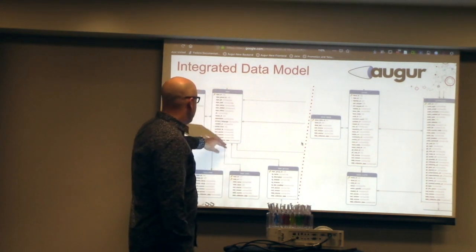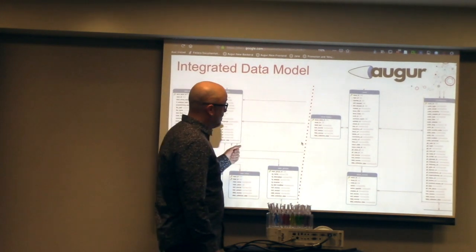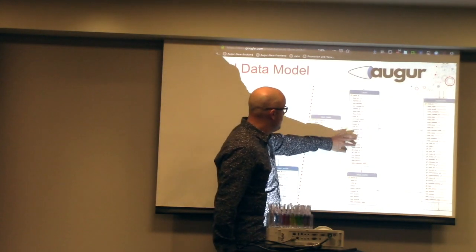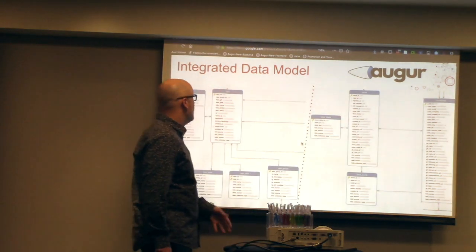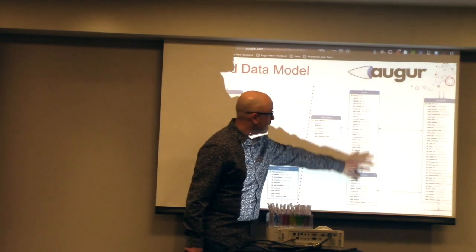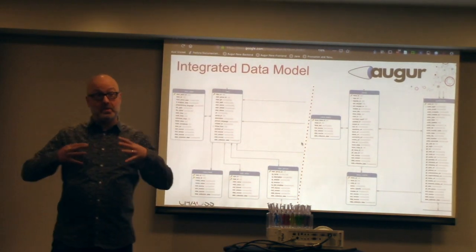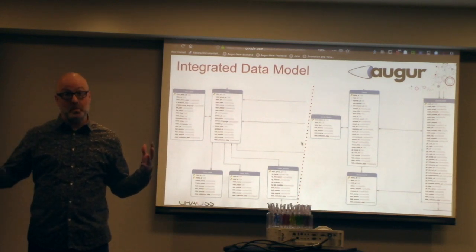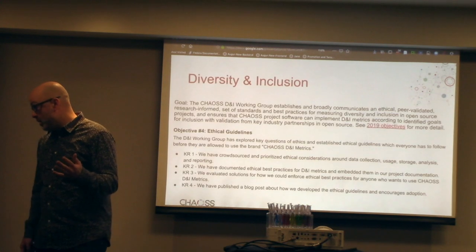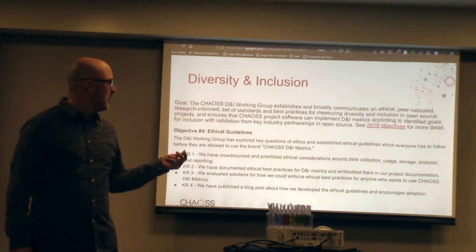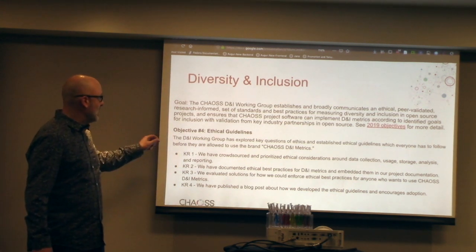Augur integrates data from GitHub, git repository mining, email lists, and other inputs, all inside one data model which supports ease of extension and developing new metrics. New APIs are simple to build. You have a repository table, a repository group table, and examples for working through them — plus issues, issue events, contributors, and labels, coming from GitHub and directly from the git repository.